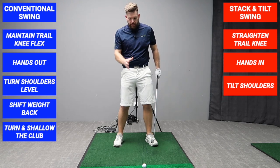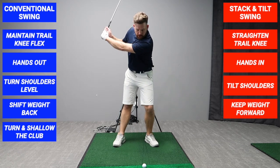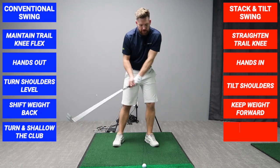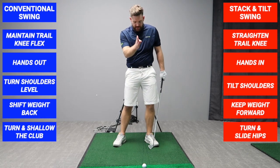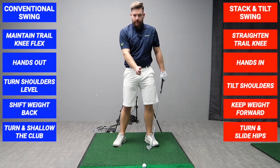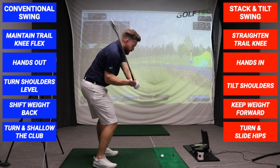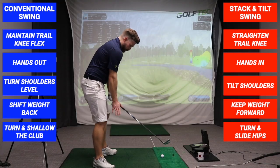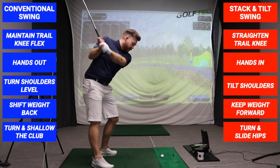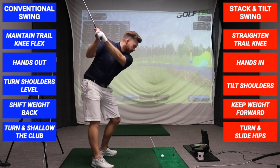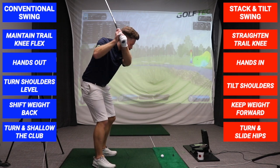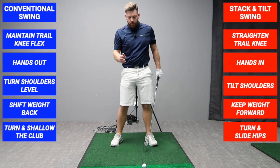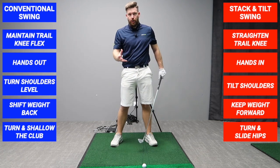In the stack and tilt swing we're already stacked with centers more forward, so from the top all we need to do is move forward and turn with the lower body. Our centers are already in front of the golf ball - we don't need a big shift to get back to make contact. In the conventional swing golfers are told to turn and shallow the club on the downswing simultaneously, which causes a whole host of problems.